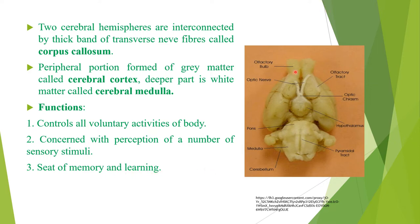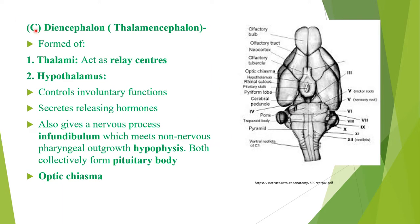In this diagram you can see the olfactory bulb, olfactory tract, cerebral hemispheres, optic chiasma, optic nerve, hypothalamus, and cerebrum. The next part of the forebrain is the diencephalon, also called thalamencephalon. It is formed of thalami, which are paired masses of grey matter that act as relay centers. They receive nerve impulses of pain, temperature, touch, etc. and conduct them to the cerebral hemisphere.